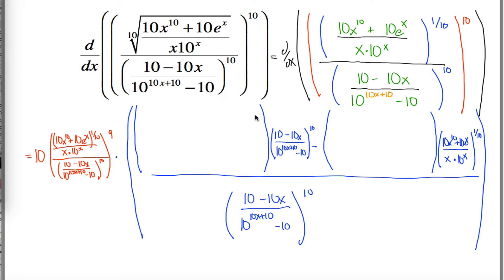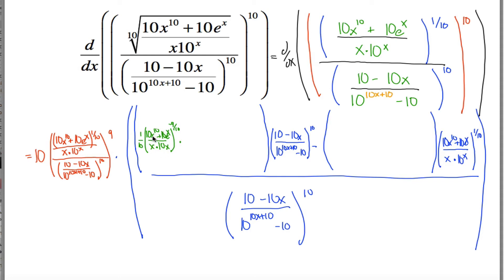If I could fill in those two spots, I'd be done. So, f prime — the derivative of the top. If it were just x raised up to the 1/10th power, I'd take the 1/10th down in front and raise everything to negative 9/10ths. Unfortunately it's not just x to the 1/10th — it's 10x to the 10th plus 10e to the x divided by x times 10 to the x, all raised to the 1/10th. So I apply the chain rule, take the derivative of the outer part, then multiply by the derivative of the inner stuff. That inner derivative is another quotient rule — another nested layer.